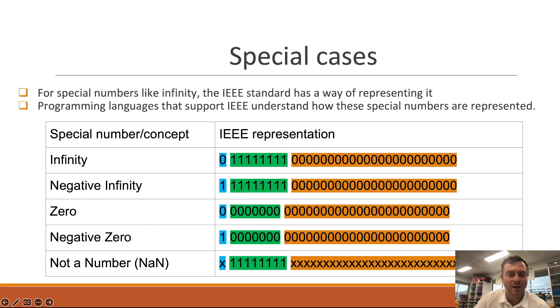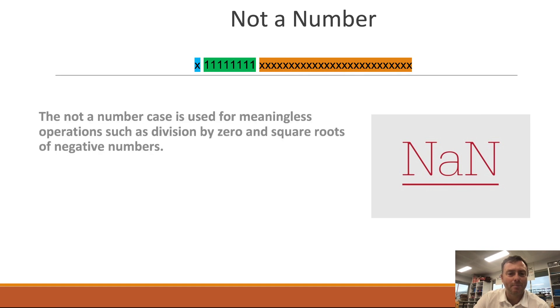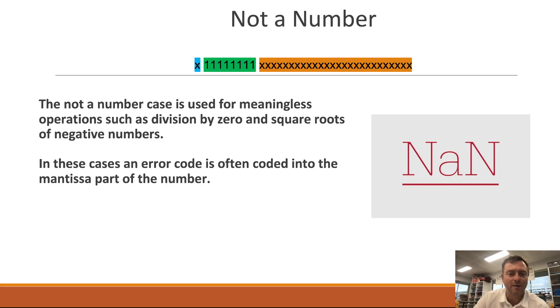So not a number is called a NaN. And basically what happens that is when you do division by zero, square roots of negative numbers, it results in the error code that comes back which gives you some feedback that it didn't work.